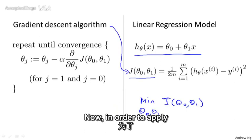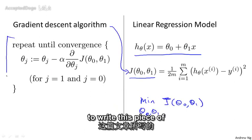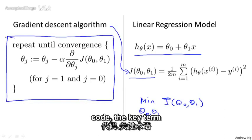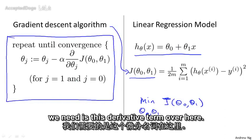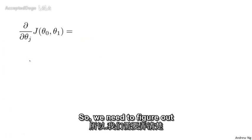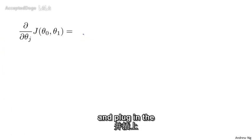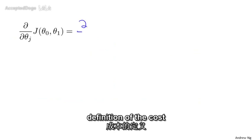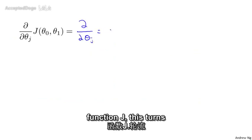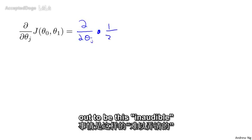Now, in order to apply gradient descent, in order to write this piece of code, the key term we need is this derivative term over here. So we need to figure out what this partial derivative term is. And plugging in the definition of the cost function J, this turns out to be this.